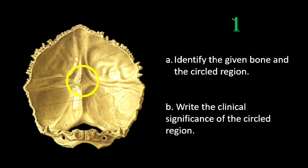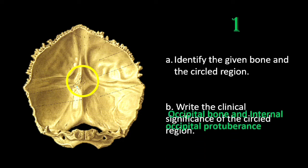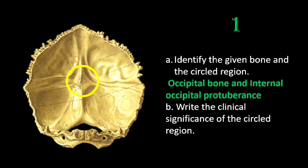The given bone is the occipital bone, and the circled region is on the internal surface of the occipital bone — that is the internal occipital protuberance, which corresponds to the external occipital protuberance on the external surface.